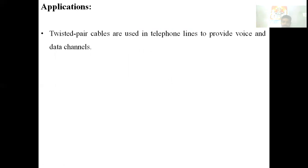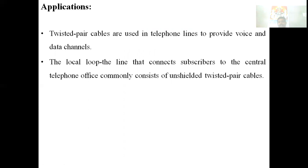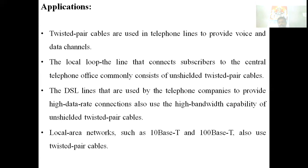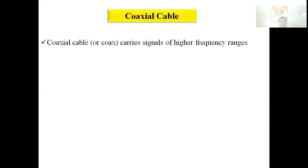Twisted pair cables are used in telephone lines to provide voice and data channels. The local loop — the line connecting the subscriber to the central telephone office — commonly consists of unshielded twisted pair cables. The digital subscriber line and LANs such as 10BaseT and 100BaseT also use unshielded twisted pair.